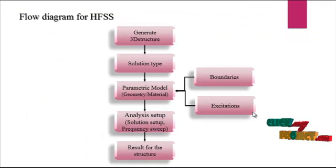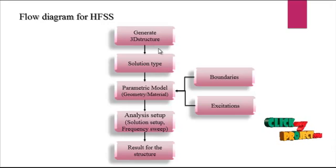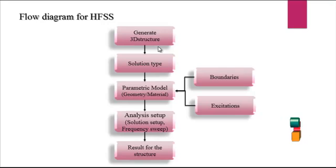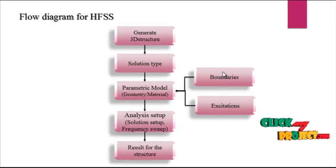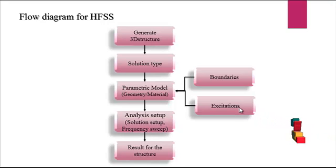Let us discuss about the flow diagram of the process. First, we generate the 3D structure by opening the HFSS software. Then here we are using the solution type — solution type is driven terminal and driven modal. Here we are using the driven terminal of the software, and then a parametric model. The parametric model is a patch model. Here we are using the boundaries and excitations of the plot. For boundaries, here we are using the perfect E boundary — that is a perfect electric field. For excitation, here we are using two excitation types: one is wave port, another one is a lumped port.